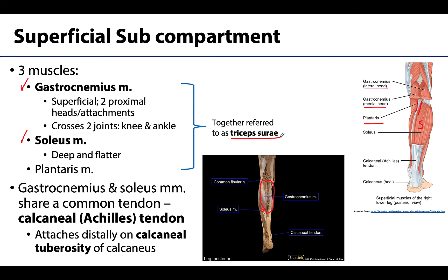They're often considered together because they have similar actions, but also importantly they share a common distal tendon that you have likely heard of as the Achilles tendon — but the real name is the calcaneal tendon, because it inserts on the calcaneal tuberosity of the calcaneus, your heel bone region right here. The calcaneal tendon is easily palpable just above the heel, it is thick, and it is often considered the most powerful, strongest tendon in the body.